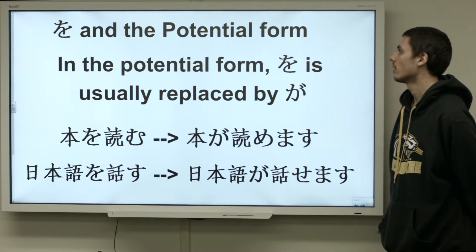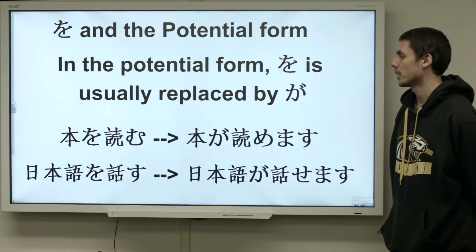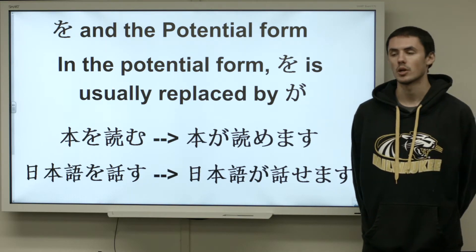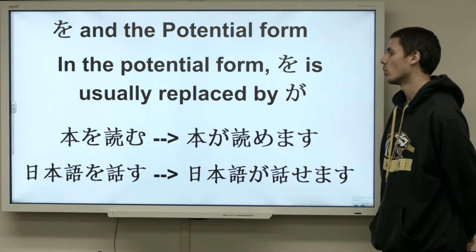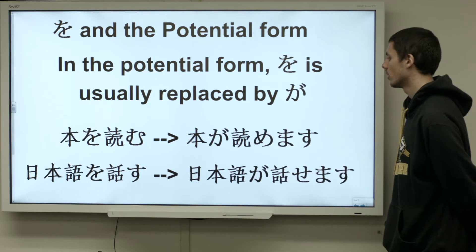And with wo and the potential form, wo is usually replaced with ga when you're using a potential expression. So, for example, hon wo yomu becomes hon ga yomemasu, or hon ga yomeru.